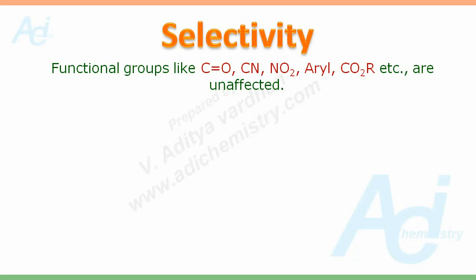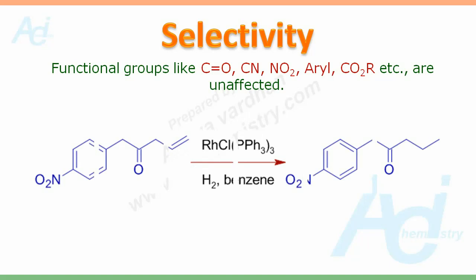The functional groups like C=O, C=N, NO2, aryl, CO2R, etc., are unaffected during the hydrogenation reactions in the presence of Wilkinson's Catalyst. For example, look at this conversion — only the double bond is reduced, leaving the C=O and NO2 groups intact.